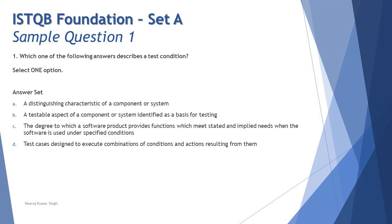Option B: 'a testable aspect of the component or system identified as a basis for testing.' Yes — a testable aspect of a component or system. The test condition can be derived for anything you test: component testing, integration testing, system testing, performance testing, or any other level. This is a testable aspect of anything identified as a basis of testing. A good trick is to replace certain words to make your answer more confidently true.